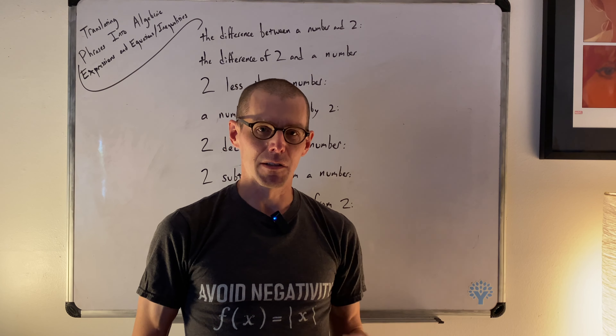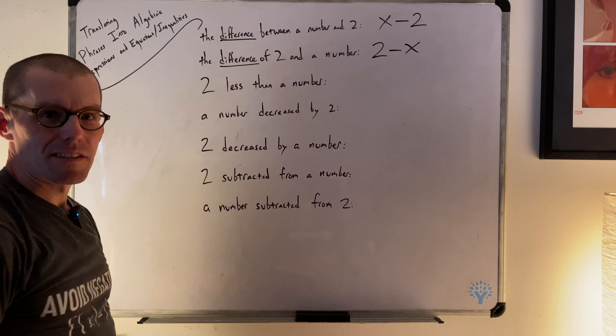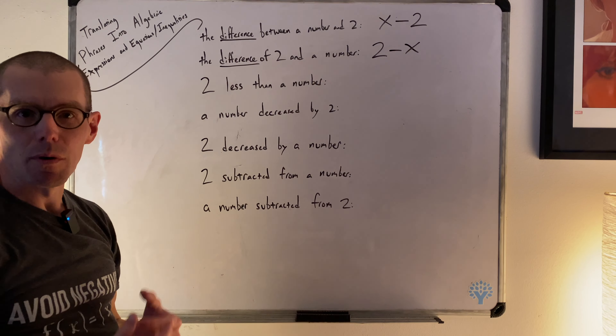Difference again suggests subtraction, but 'the difference of two and a number' has a changed order — and that matters. So this is not the same. It's saying the difference of two and a number: two minus x, as opposed to x minus two. We don't know what x is, so in most cases those two aren't equivalent because subtraction is not commutative.